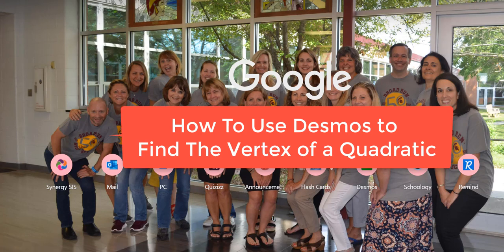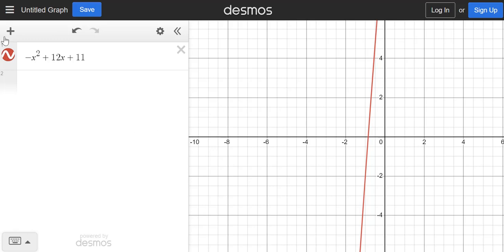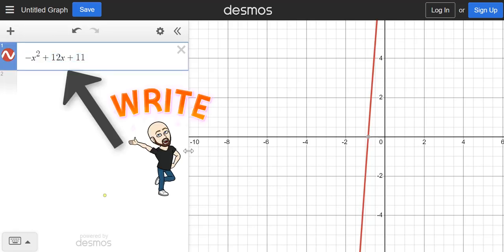So let's go to Desmos. Now in Desmos, you'll type in whatever your quadratic equation is. So you'll do that, and then you'll see this picture show up.